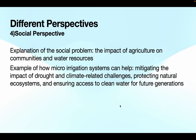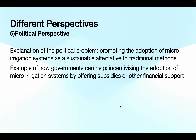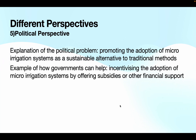From a political perspective, the problem facing the irrigation sector is promoting the adoption of micro irrigation systems as a sustainable alternative to traditional methods. Government can help by incentivizing the adoption of micro irrigation systems through subsidies or other financial support.